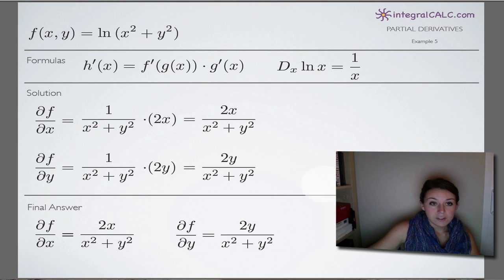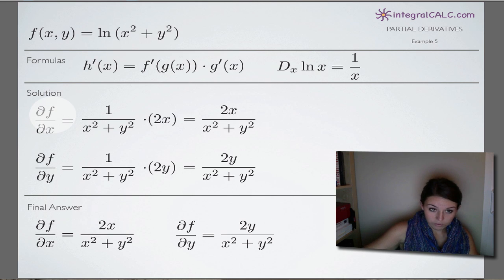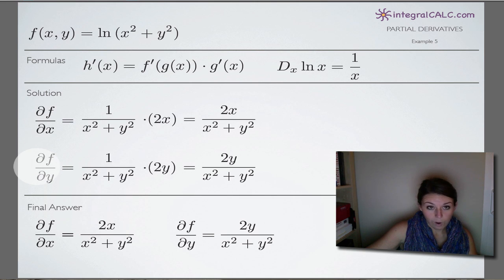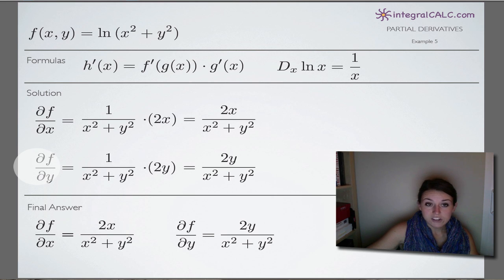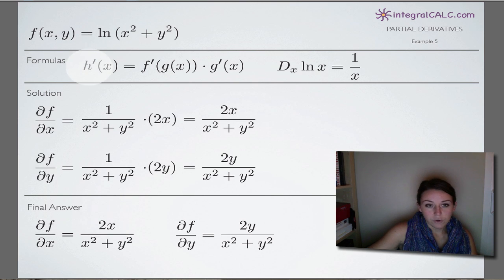The first thing we need to realize is that we are doing a partial derivative problem. So we need to take the partial derivative of f with respect to x and the partial derivative of f with respect to y. Because we have the natural log of a quantity — x squared plus y squared — that is more complicated than just the natural log of x, we're going to need to use chain rule.